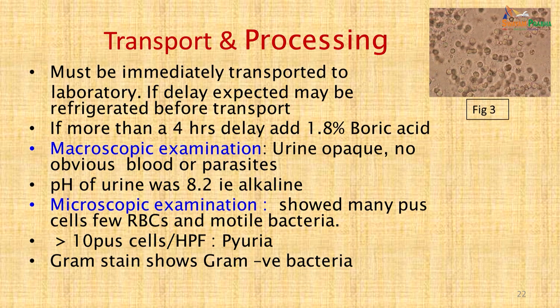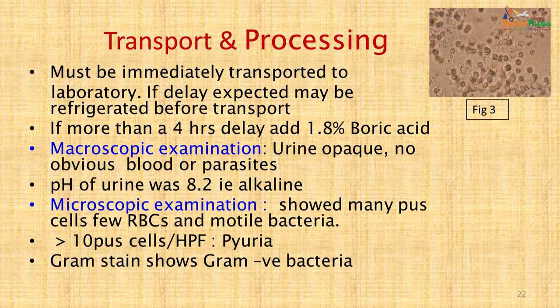In the laboratory, microscopic examination of the urine showed it was opaque with no obvious blood or parasites. The pH was 8.2, indicating alkaline urine. Microscopic examination showed many pus cells in uncentrifuged urine, few RBCs, and motile bacteria. The presence of more than 10 pus cells per high-power field indicates pyuria and urinary tract infection. This is the first test that can be performed on any patient by microscopic examination of uncentrifuged urine.